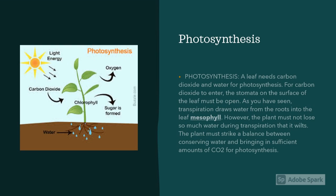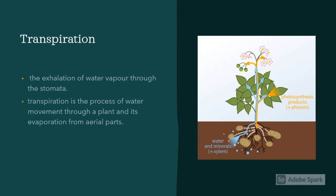Now let's understand photosynthesis, one of the most important processes. This process takes part in the leaf. In this process, light, carbon dioxide, and water are converted into valuable oxygen and glucose for the growth of the plant. Now let's also talk about transpiration. The exhalation of water vapour through the stomata is known as transpiration.